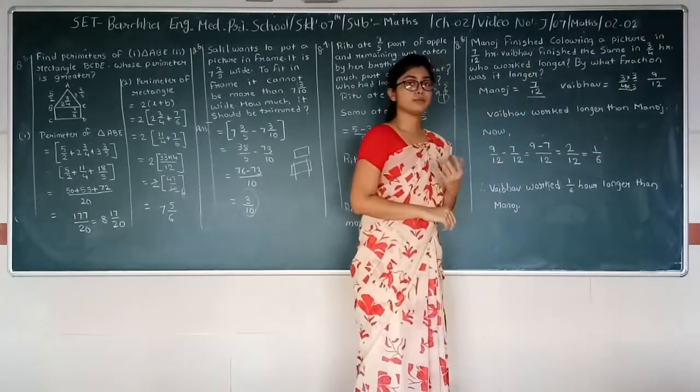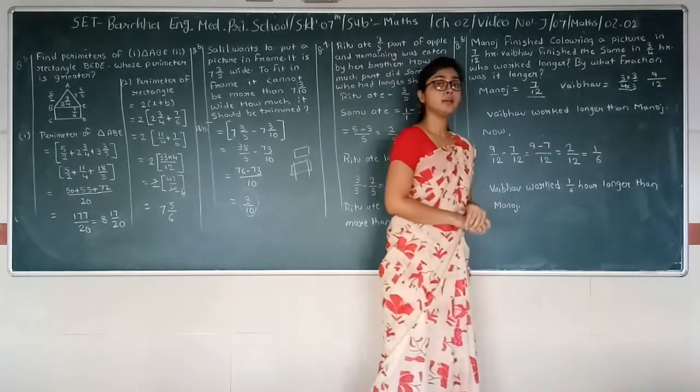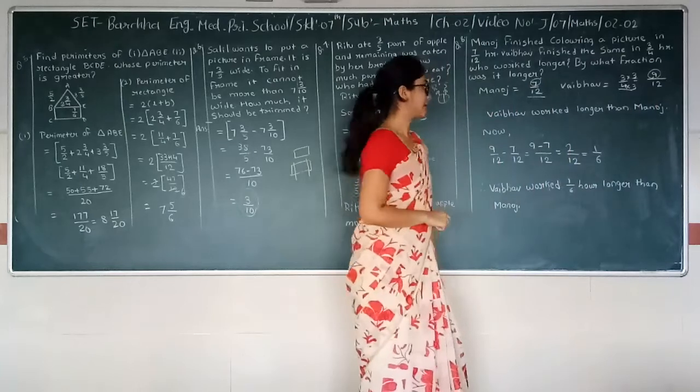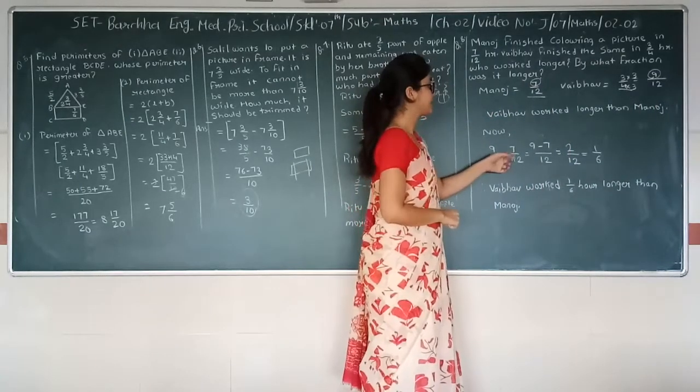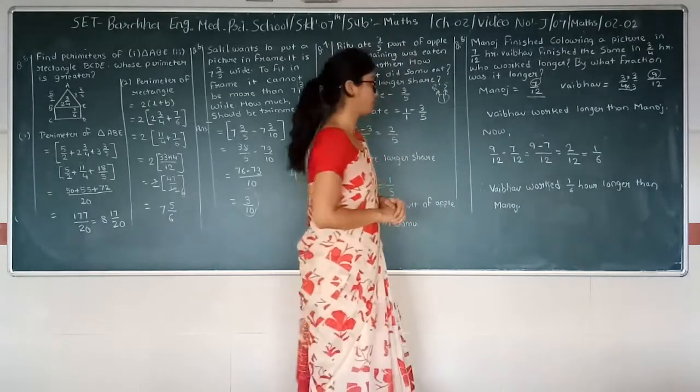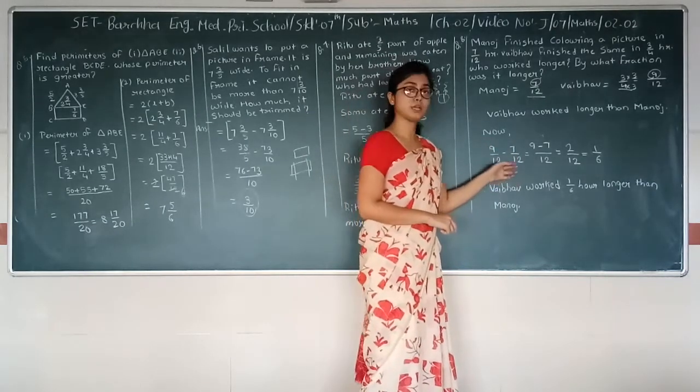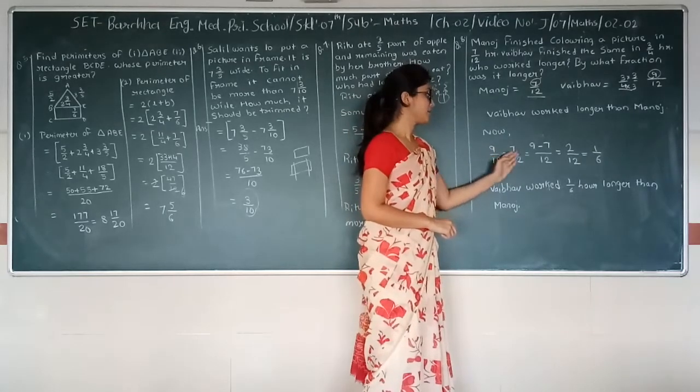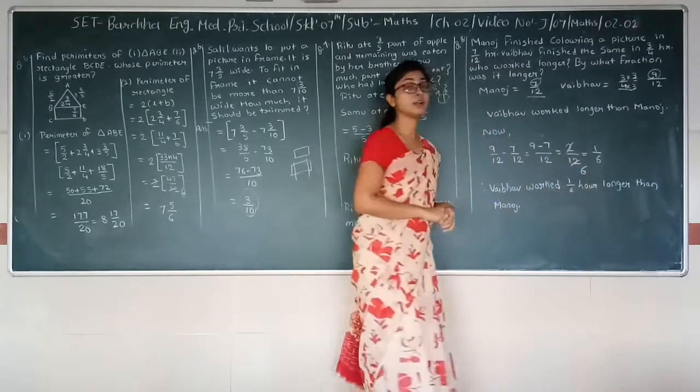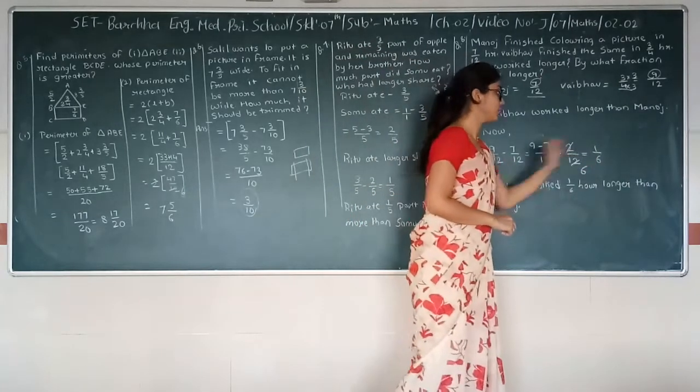Now 9 upon 12 minus 7 upon 12. But we have to find by how much did one work longer. So 9 upon 12 minus 7 upon 12 is equal to, as we have denominator same, 9 minus 7 which gives 2 upon 12. If we simplify this is 1 upon 6 because 2 goes into 12. So answer is 1 upon 6. By 1 upon 6 one group worked longer.